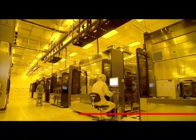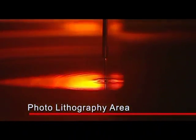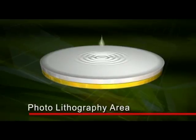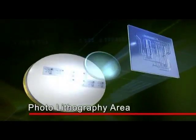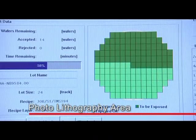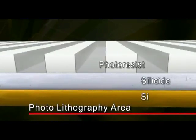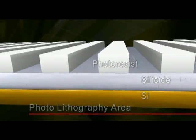The wafer is now covered in a thin film and sent to the photolithography area for transfer of circuit patterns. A thin layer of photoresist, a photosensitive liquid, is uniformly coated on the wafer surface. The photomask is then placed over the wafer. Light is exposed onto the wafer through the photomask, creating a pattern of exposed and unexposed areas based on the pattern of the photomask. Unexposed areas remain covered with photoresist.